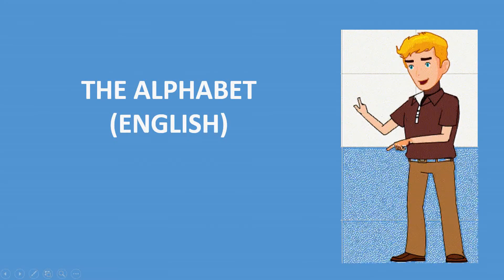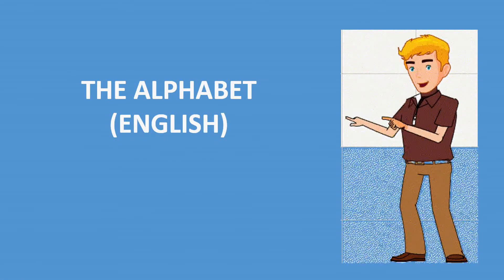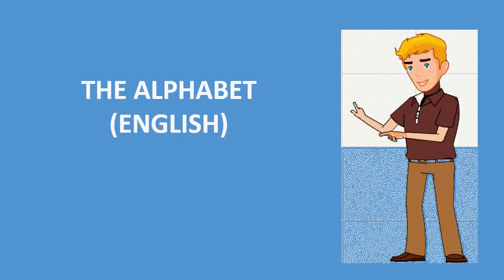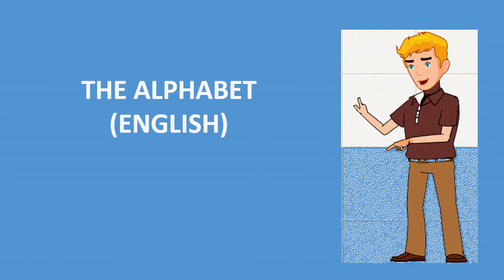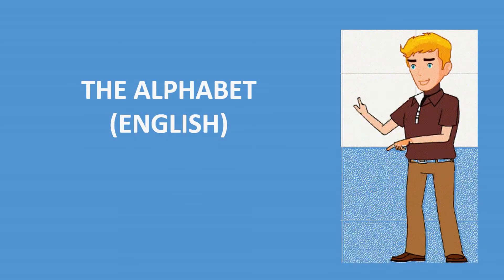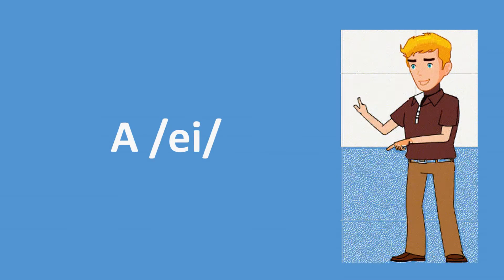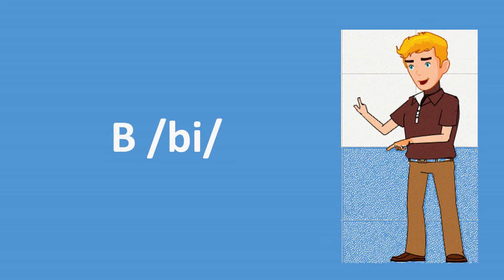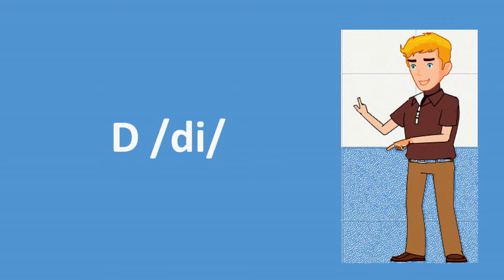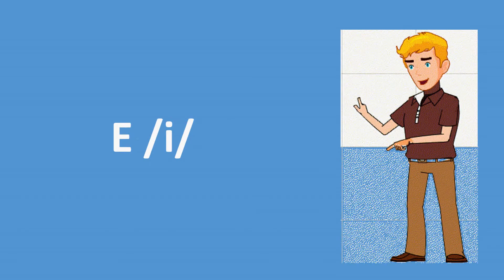Hello YouTube followers. Sometimes we need to spell the alphabet in English. If you are studying English, maybe this will help you with pronunciation. You can say: A, B, C, D, E, F.